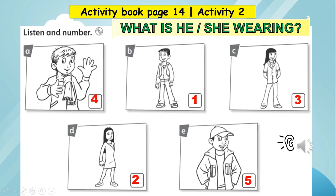Number two: pink dress and black shoes. Number three: she's wearing black trousers and a purple shirt. Number four: he's wearing a yellow scarf and orange gloves.